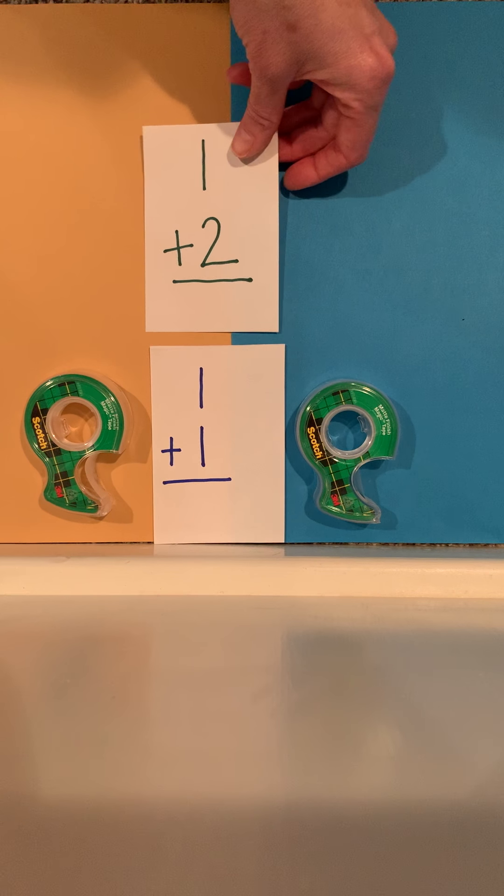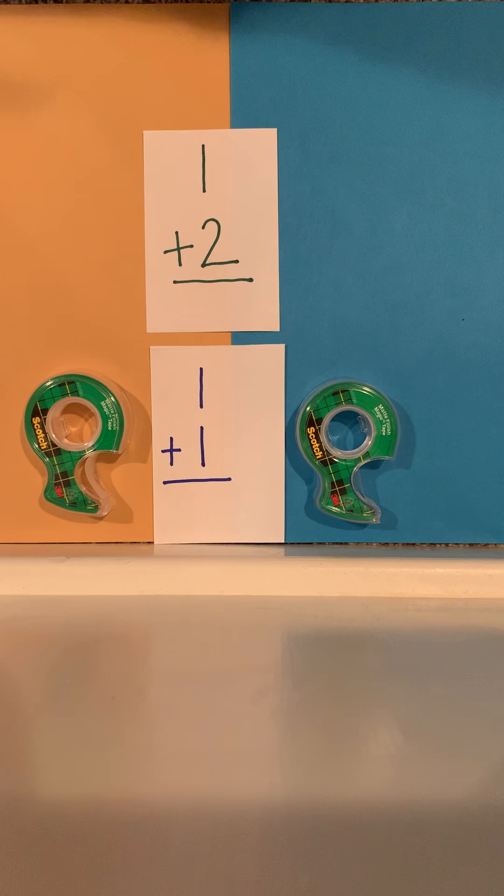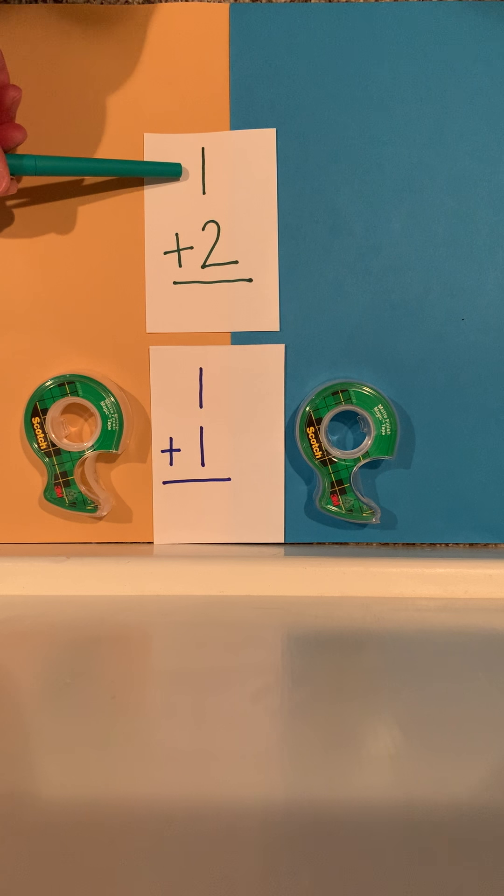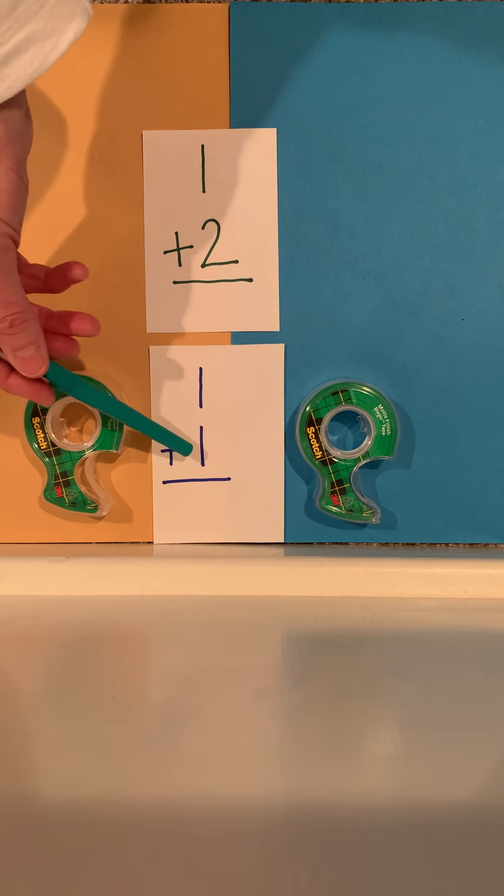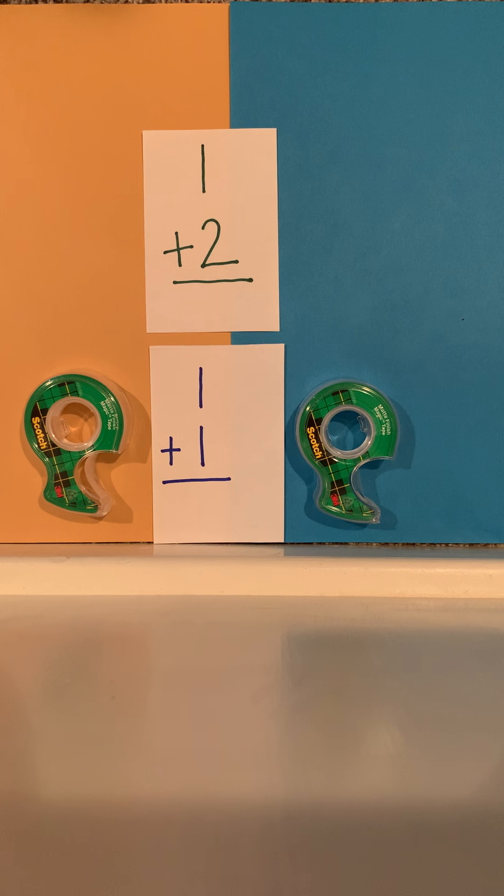Now let's look at this 1 plus 2 fact. This is a doubles plus 1. If I look for my smallest number, which is 1, and I think in my head 1 plus 1, and then I just add 1 more, my new answer should be not 2 but 3.